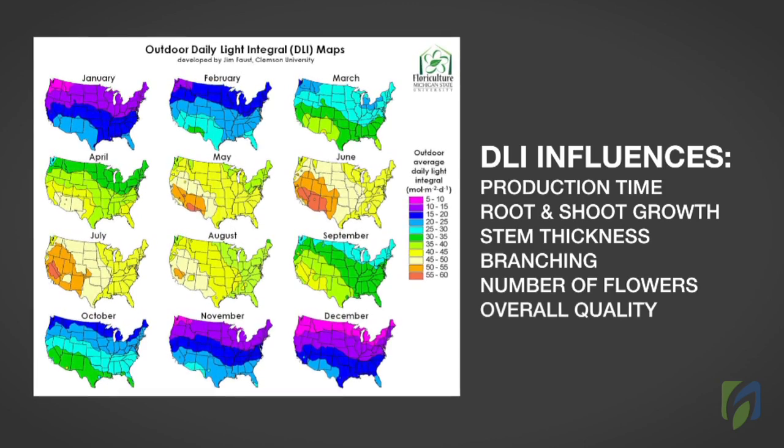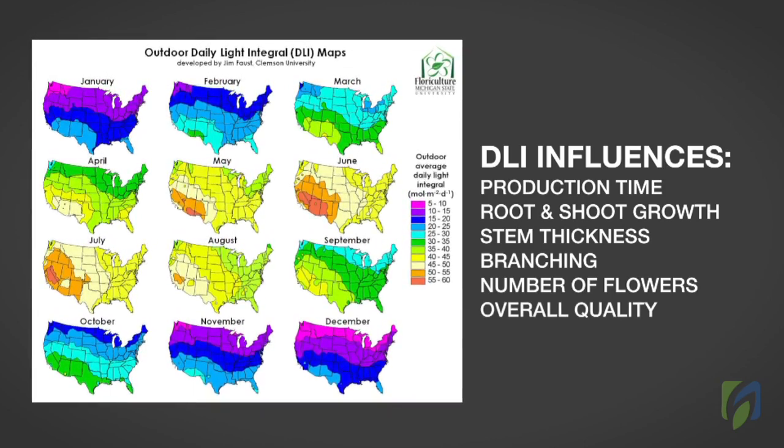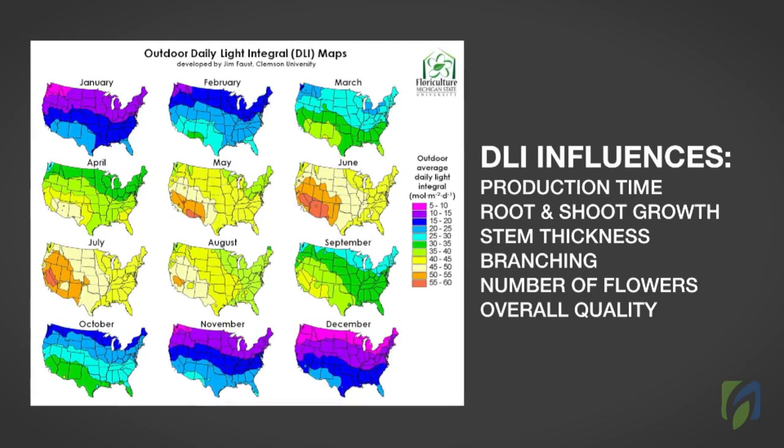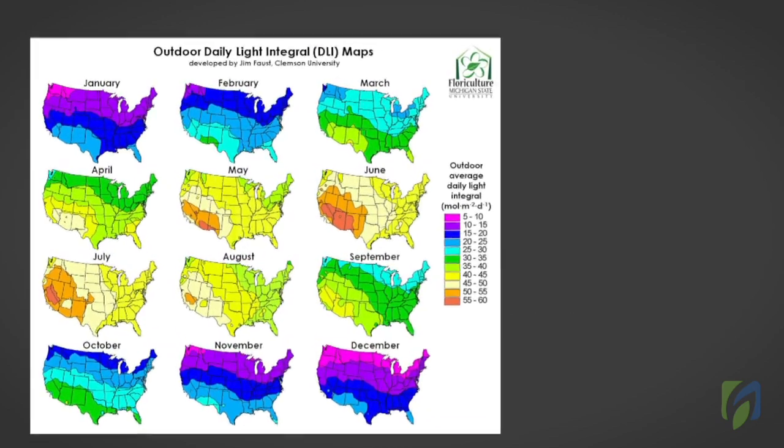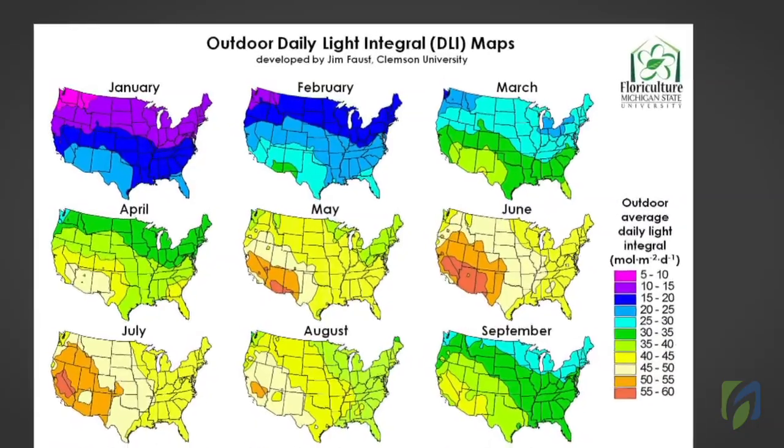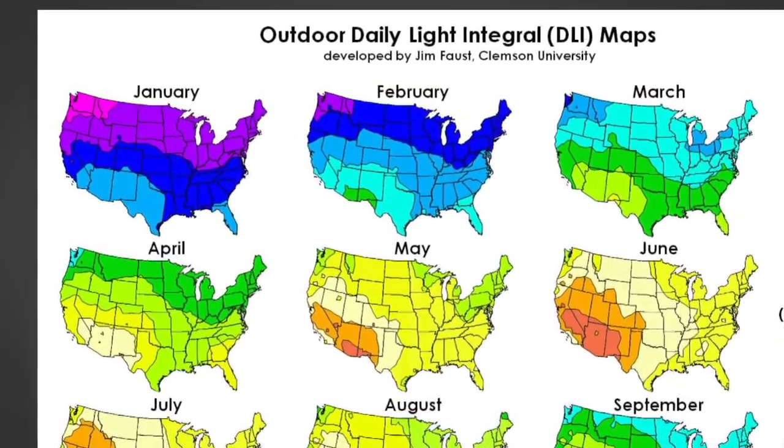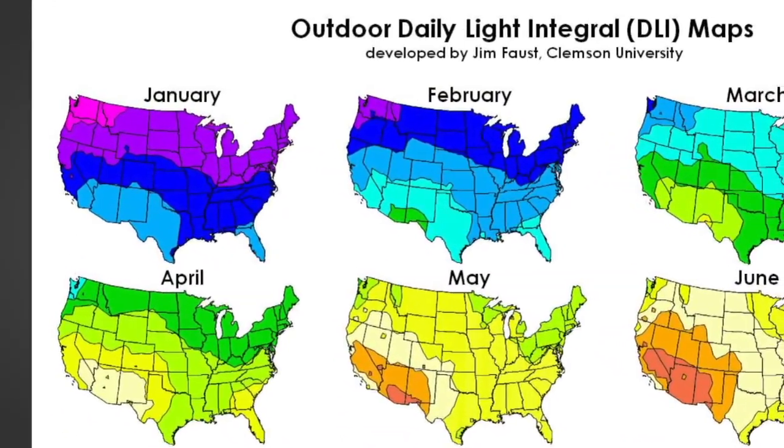Growers who monitor and record the DLI received by their crops can determine whether they need to provide supplemental light or shade their plants. Measurement of DLI can be particularly useful for growers in northern latitudes who are producing crops during the months of December through March.